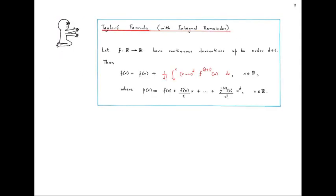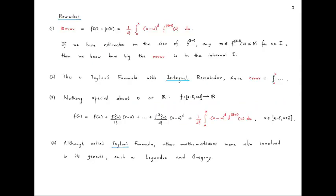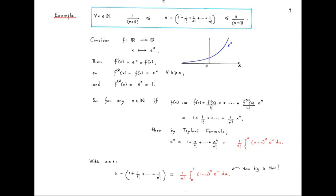Before we give a proof of Taylor's formula, let us see a pure mathematical application where we will show these inequalities: for every natural number n, Euler's constant e minus the rational number 1 plus 1/1! plus 1/2! plus up to 1/n! has an error bounded above and below by specific quantities. We will prove this using Taylor's formula.